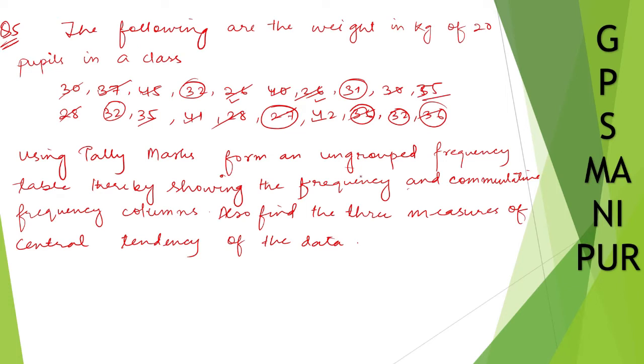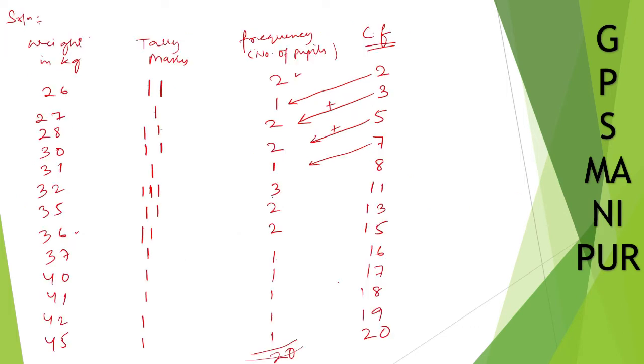Now what is the next thing they are asking? Also find the 3 measures of central tendency of data. So we need to find out mean, median, and mode. Let us find mean first. In order to find mean we need to find something called fi xi. So this is fi and this is xi. Then multiply fi and xi.